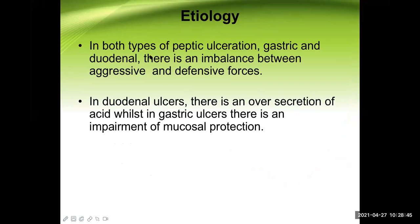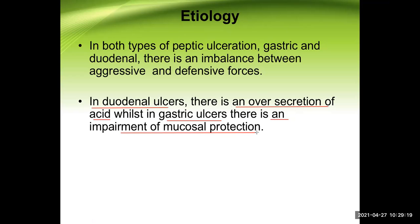Regarding etiology: in both gastric and duodenal ulceration there is an imbalance between aggressive and defensive forces. In duodenal ulcer, there is over-secretion of acid, whilst in gastric ulcer there is impairment of mucosal protection. This is an absolutely important concept. Defensive forces include surface mucous secretion, bicarbonate secretion into mucus, mucosal blood flow, apical surface membrane transport, epithelial regenerative capacity, and elaboration of prostaglandins.